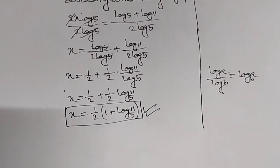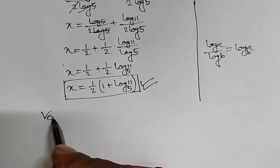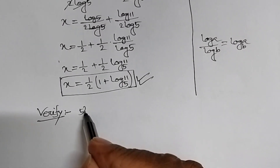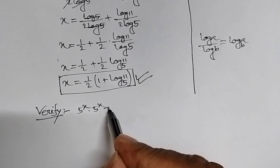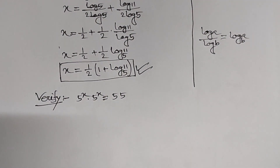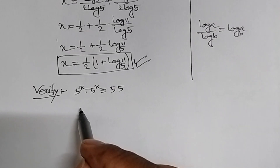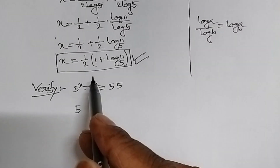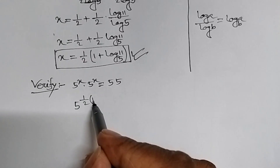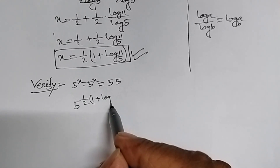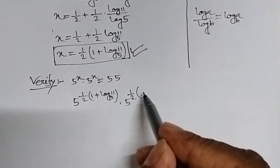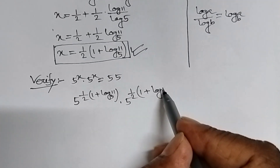To verify, we write the original equation: 5 power x times 5 power x equal to 55. We substitute x equal to 1 upon 2 into 1 plus log 11 base 5. This gives 5 power 1 upon 2 into 1 plus log 11 base 5, times 5 power 1 upon 2 into 1 plus log 11 base 5.